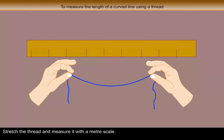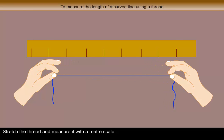Stretch the thread and measure it with a meter scale. The length of the thread is equal to the length of the curved line.